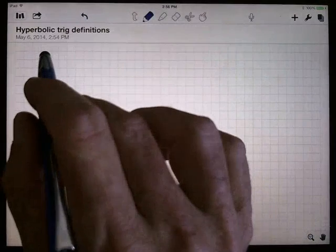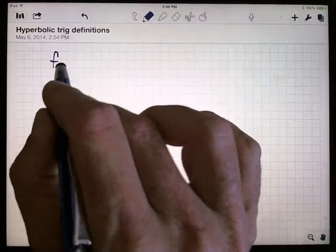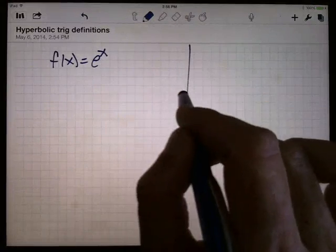Alright, we're going to define the hyperbolic trig functions here by looking at the exponential function. I'll note that the function f(x) equals e to the x is not an even function nor an odd function.